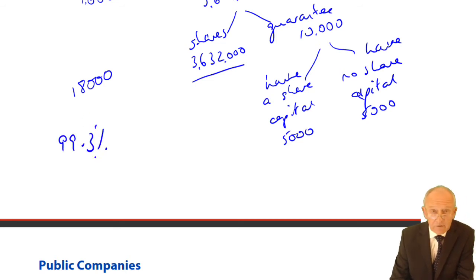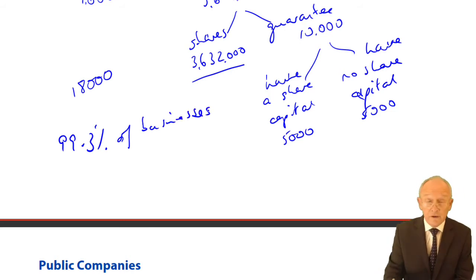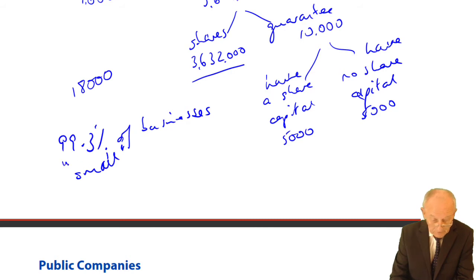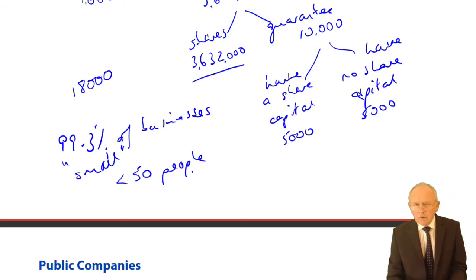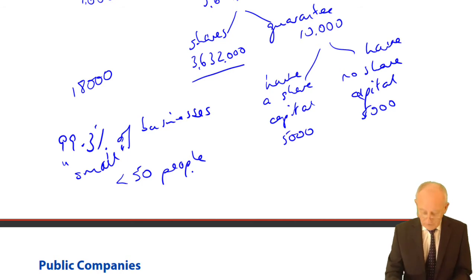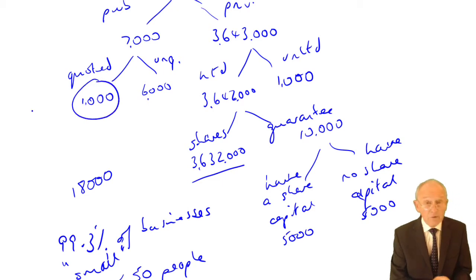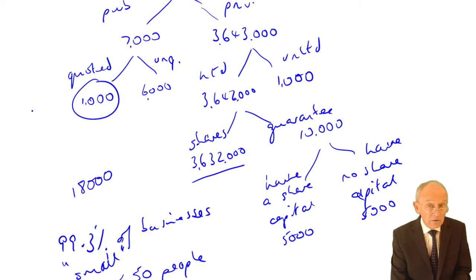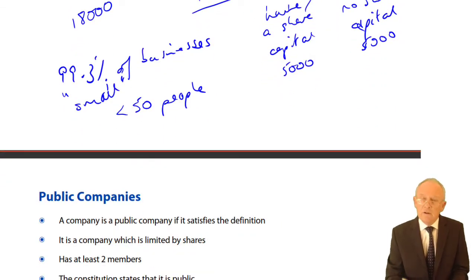99.3% of UK businesses — including partnerships and sole traders — are what is called small businesses: people that employ or have involvement of fewer than 50 people. A huge proportion of businesses are carried on by individuals, partnerships, or companies with fewer than 50 people involved.